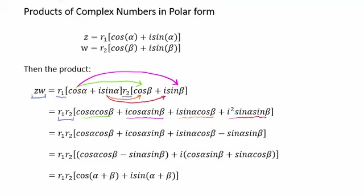We recognize that the factor of i squared is really a multiplication by negative one. We then group the two real portions together and the two imaginary portions, factoring out the common factor of i. The first grouped expression we recognize as the cosine of the sum of two angles, and the second as the sine of the sum of two angles. This gives us our familiar form for the product of two complex numbers.